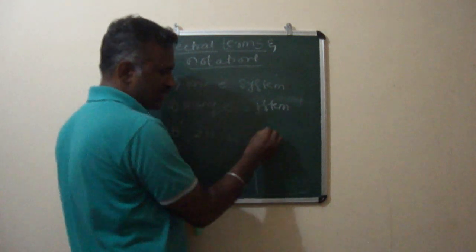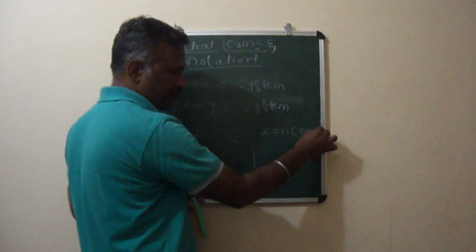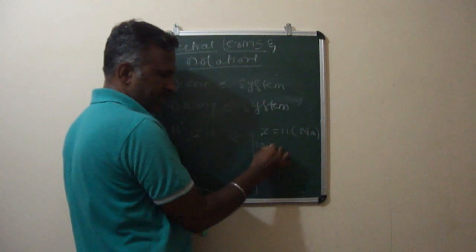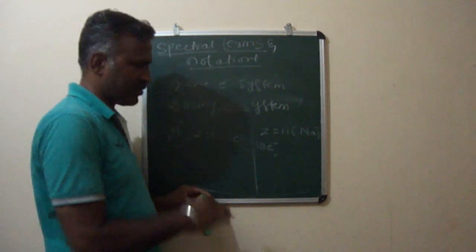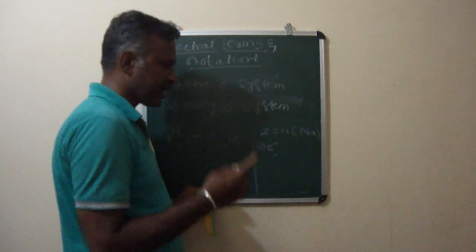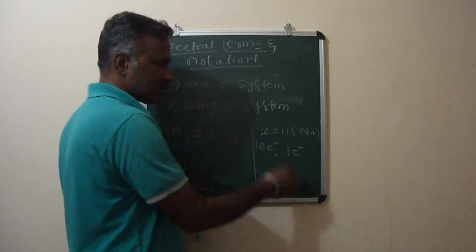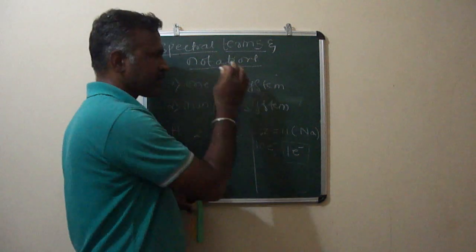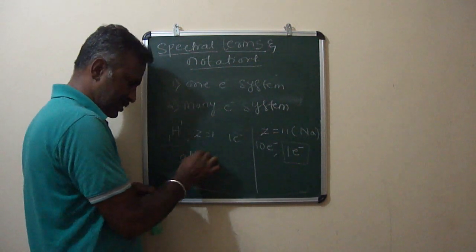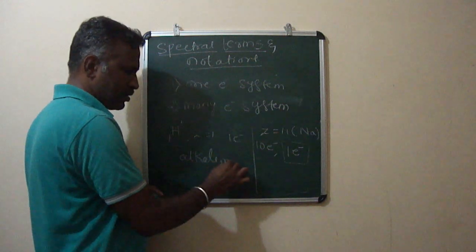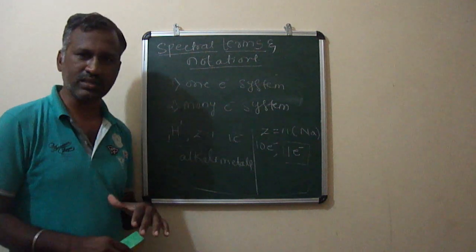Similarly, if I consider Z equals 11, that is sodium — 10 electrons out of 11 will be completely filled in various shells and subshells, and we have only one electron remaining in the outermost orbit. This one electron will be contributing to the spectrum. Therefore, all alkali metals will be known as one-electron systems.